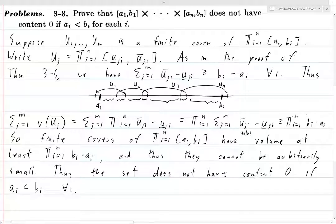However, if any particular bi minus ai is 0, then this product is 0. And so I guess from that, using this argument, that doesn't necessarily prove that if ai equals bi for a particular i, then the set does have content 0. I'm pretty sure that has to be the case, because it would have measure 0 just by simple measure theory arguments. And if it has measure 0, it has to have content 0. So yeah, but the problem isn't asking us to prove that.